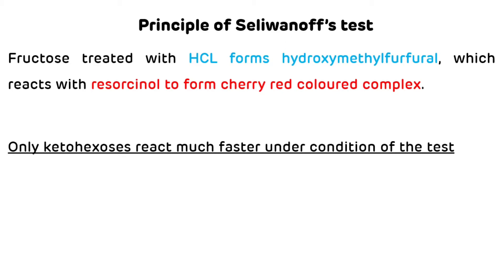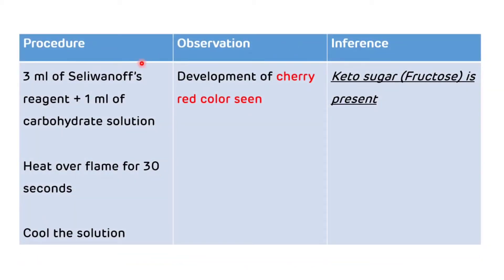Procedure of Selivinov's test: In a test tube, take 3 ml of Selivinov's reagent and then add 1 ml of carbohydrate solution. Heat over the flame for 30 seconds and cool the solution. Development of cherry red color indicates that keto sugar, usually fructose, is present in the solution.